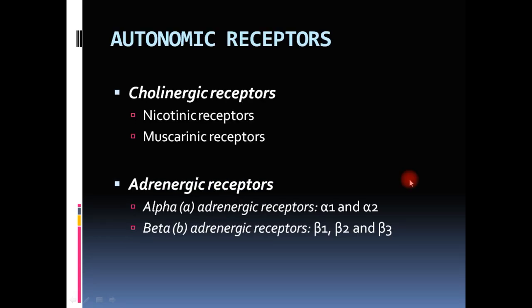Now coming to autonomic receptors. These receptors are protein molecules present on the surface of the postganglionic neuron or the effector organ, located close to the nerve endings that secrete neurotransmitters. The neurotransmitters act on these receptor proteins, which then convey the message or impulse from the neurons to the effector organs.